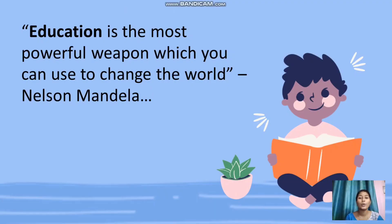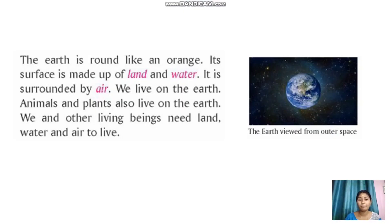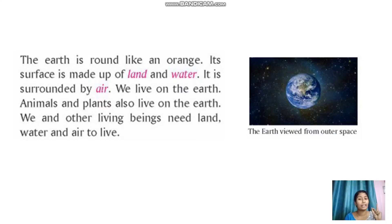First, we are going to learn about the earth. The earth is like a round structure, and some of them are saying it looks like an orange in color. The earth is made up of three types of surfaces — that is land, water, and air. After this slide we will have a brief discussion about the land, water, and air.